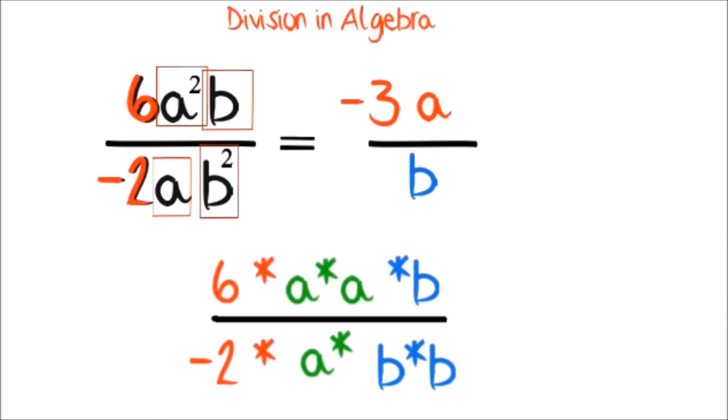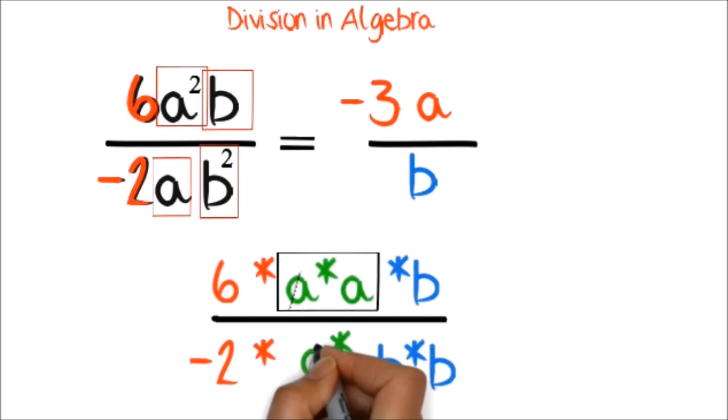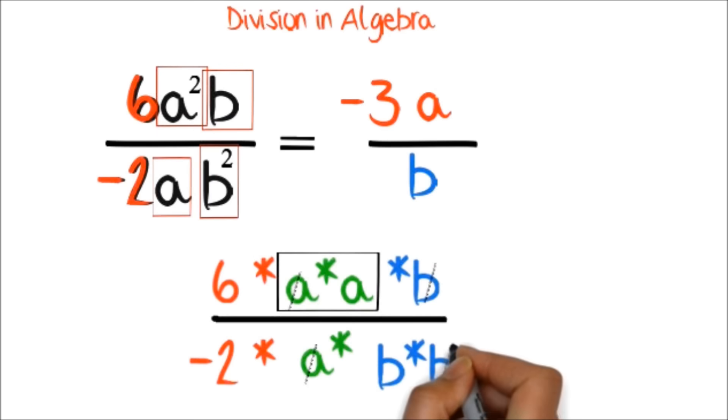What we are actually doing is this. a squared is the same as a times a. So, we are just splitting the exponents and cancelling the common letters. Notice that we did the same for the b. After the cancellation, we notice that we have 1a at the top and 1b at the bottom.